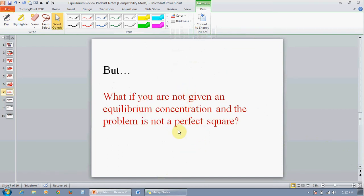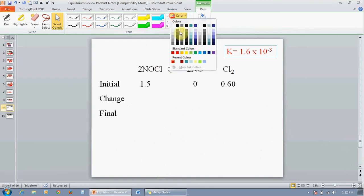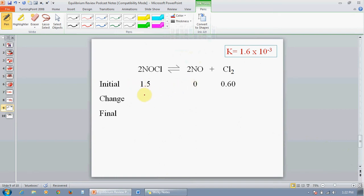If you're not given an equilibrium concentration and you don't have a perfect square, you're not going to have any problems because the only type of problem they're going to give you are problems with small K values. This means K values less than 1 times 10 to the negative 2. When you have a small K value like that, you're going to be able to make some assumptions. So, first, let's look at this problem. We've got a nice small K. Our reaction is going to shift to the right to make some NO. So, our change is going to be minus 2X plus 2X plus X.